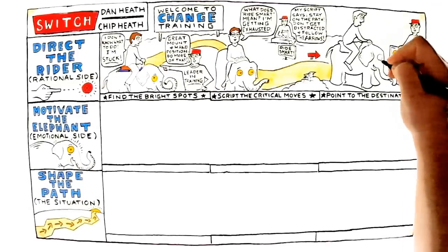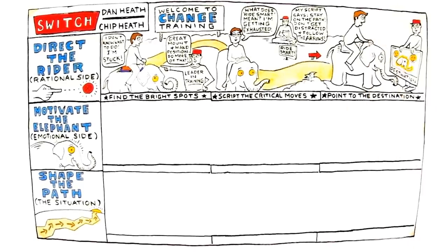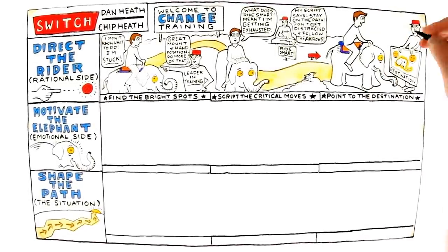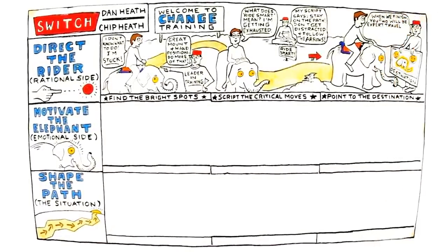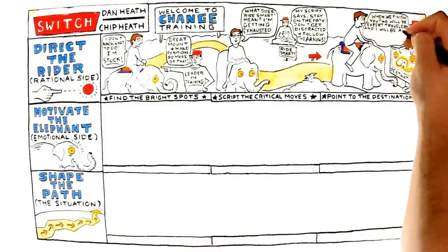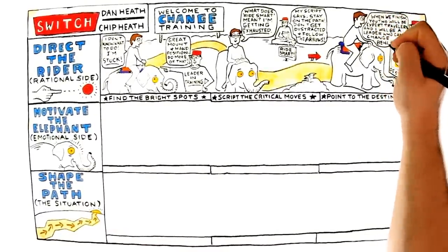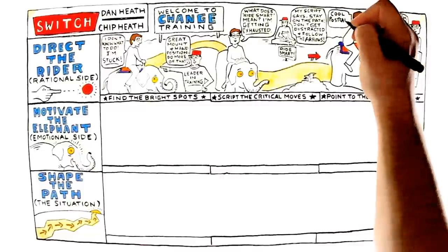As a leader, create what the Heath Brothers call a destination postcard, a vivid image from the near-term future that shows what could be possible. Then, back it up with a script for the behaviors you want. The Heath Brothers say, change is easier when you know where you're going and why it's worth it.